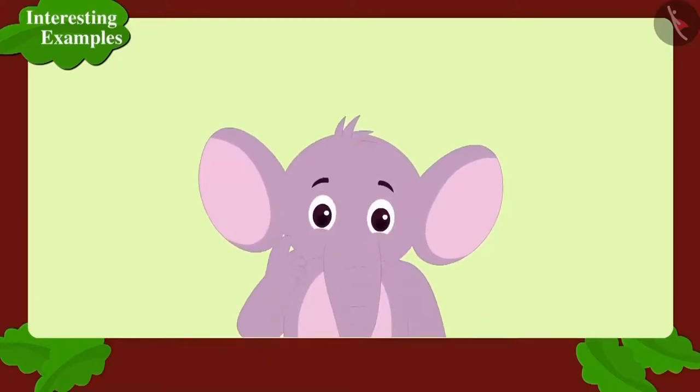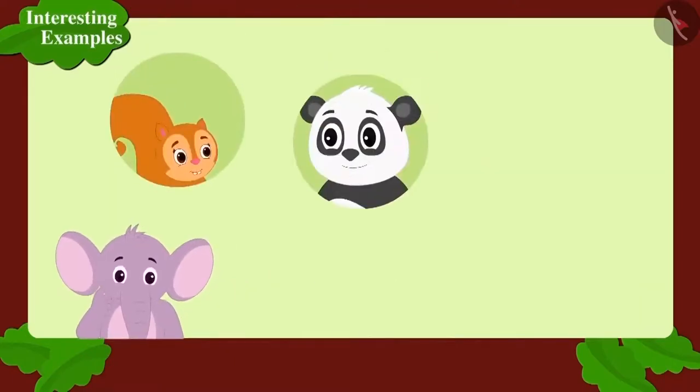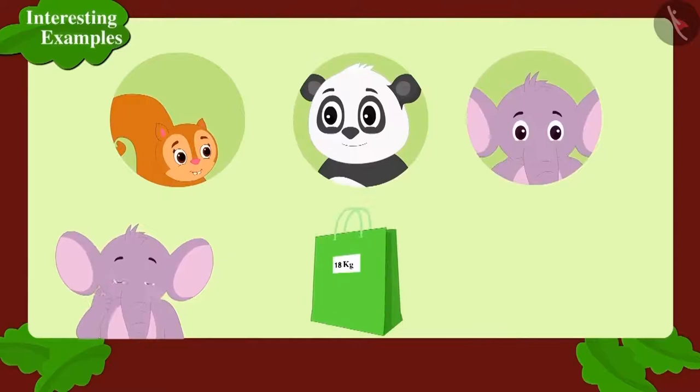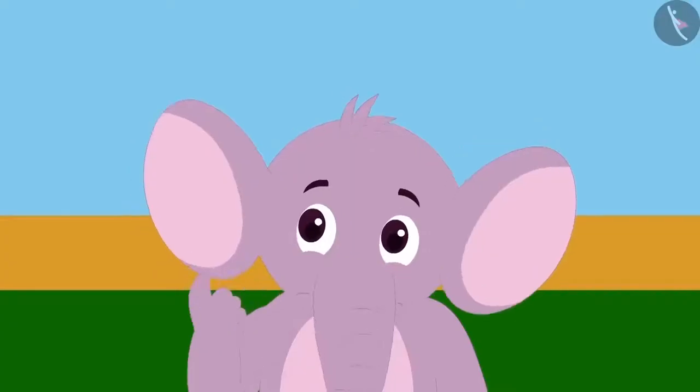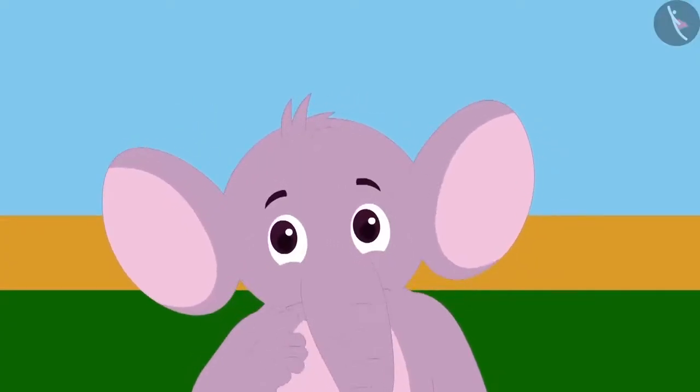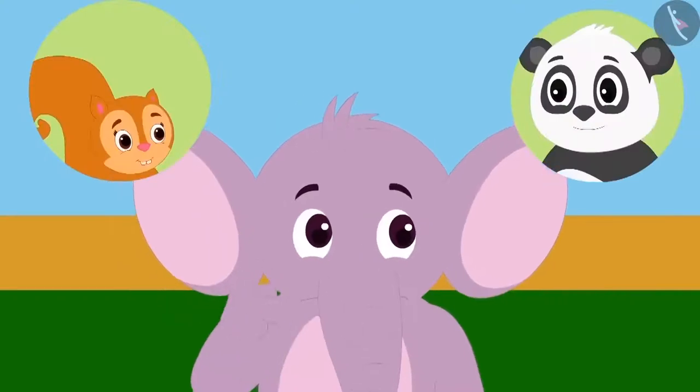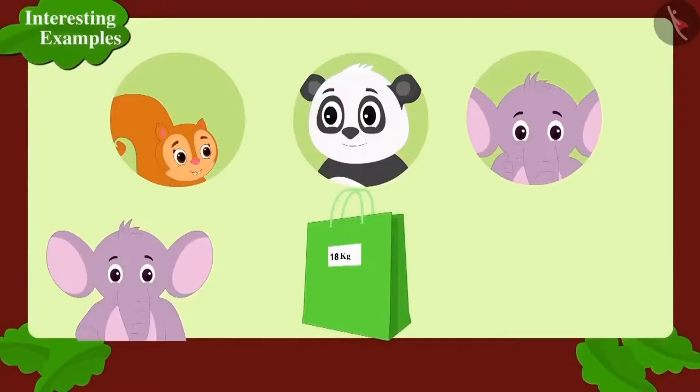Appu bought 18 kilograms of potatoes. Appu thought that he will share the potatoes equally with Chanda and Golu. However, he is not sure how many potatoes he should give to Chanda and Golu. Children, can you help Appu?